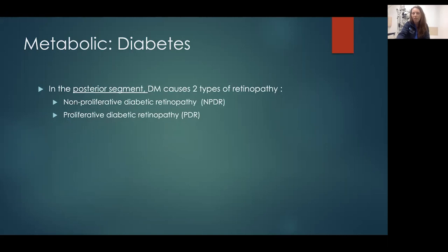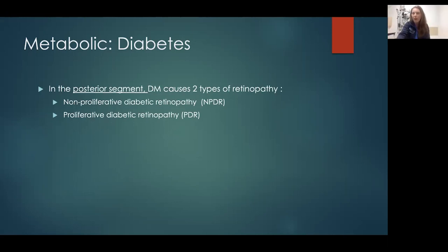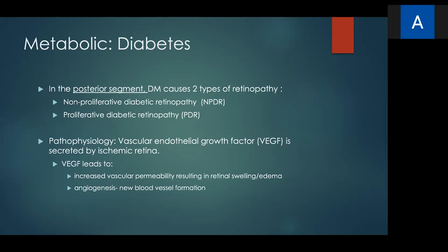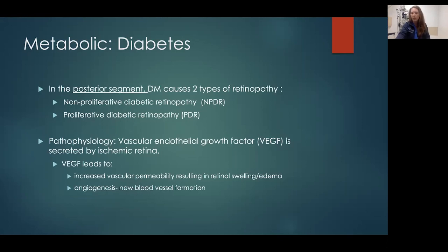In the posterior segment — anything behind the lens, so the vitreous or retina — there are two types of diabetic retinopathy: non-proliferative, called NPDR, and proliferative, called PDR. The pathophysiology of both comes down to vascular endothelial growth factor, secreted by an ischemic retina in diabetes — the same type of microvascular changes you see in the kidney. Ischemia leads to a surge in VEGF, causing increased vascular permeability with swelling in and under the retina, and angiogenesis. New blood vessels form to try to increase perfusion of the ischemic retina, but these new vessels are leaky, fragile, and bleed, leading to bleeding in the vitreous cavity and scarring.